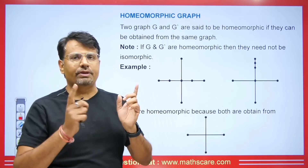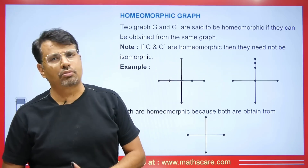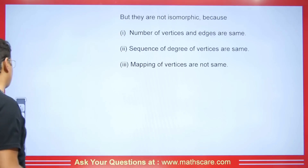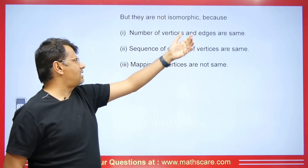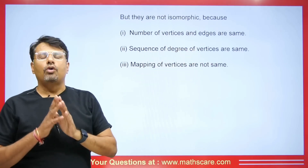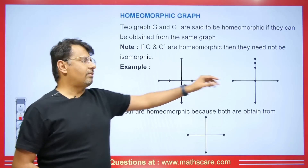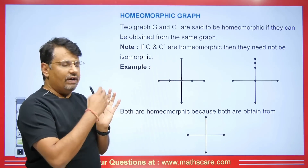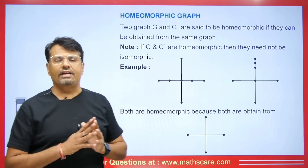To check whether homomorphic graphs are also isomorphic, you use the method already explained. When you check these two graphs shown here, they will not be isomorphic. The sequence of degree of vertices may be the same, but the mapping of vertices is not valid — there is no one-to-one correspondence between the vertices and edges. So they are homomorphic but not isomorphic in this case.